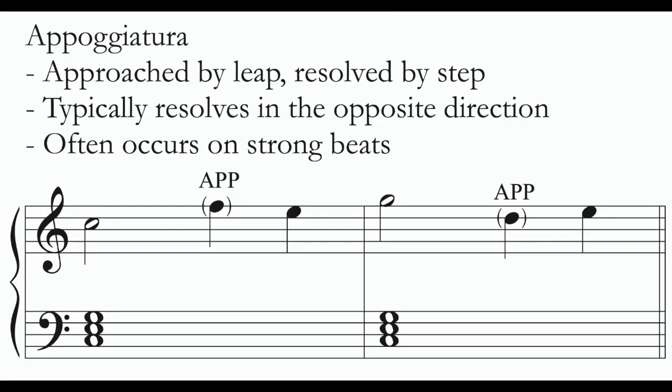The passing tone and the neighbor tone both use stepwise resolutions and approaches only. The appoggiatura is a different kind of non-chord tone: it is approached by leap and resolved by step. We jump to the non-chord tone, and then we resolve by step. Most typically, the appoggiatura resolves in the opposite direction. In my first measure I leaped up to the F from C, and then resolved down by step. Likewise, in the second measure I leaped down from G to D, D being my non-chord tone, and then resolved back upwards by step. Appoggiaturas often occur on strong beats, with their resolutions on weaker beats.